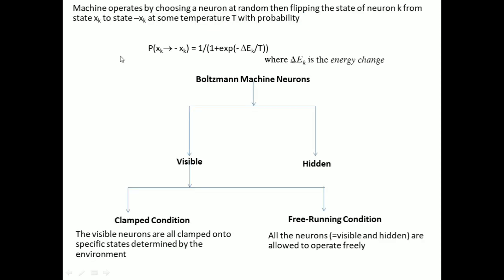The Boltzmann machine operates by choosing a neuron at random and then flipping the state of neuron k from state x_k to state minus x_k at some temperature T with probability P(x_k → -x_k) = 1/(1 + exp(-ΔE_k/T)).